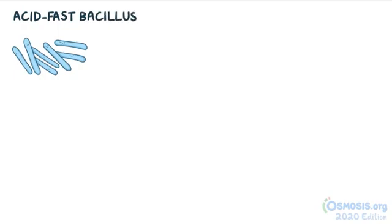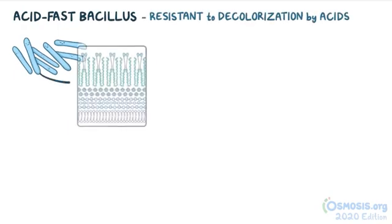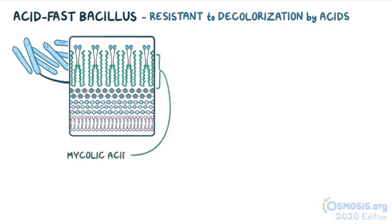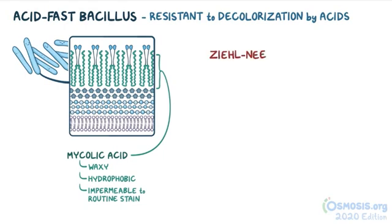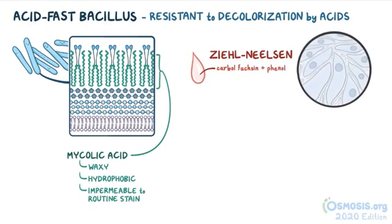Mycobacterium leprae is an acid-fast bacillus, which means it's resistant to decolorization by acids, and it has a high content of mycolic acid in its cell wall, which makes it waxy, hydrophobic, and impermeable to routine stains like Gram stain. So it needs special staining methods to be visualized, like Ziehl-Neelsen staining, which uses carbolfuchsin combined with phenol, which is able to penetrate the waxy mycobacterial cell wall.